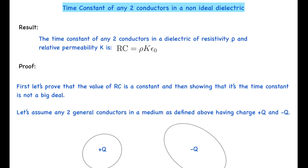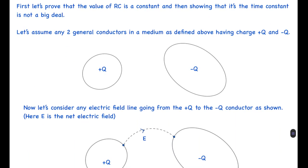If you want to try proving this, you should do it now before looking at the proof. Let's prove that the value of RC for any general case involving two conductors in a medium is constant, and then showing that it is the time constant is straightforward. Let's assume any two general conductors in the medium as defined above, having charges +q and −q.